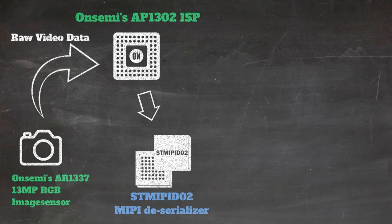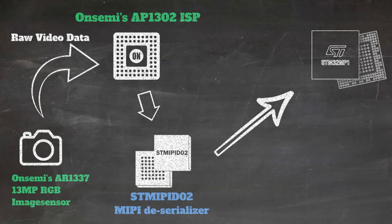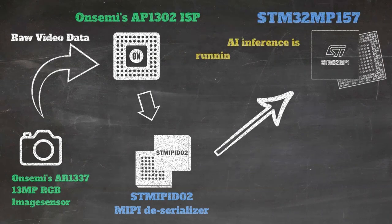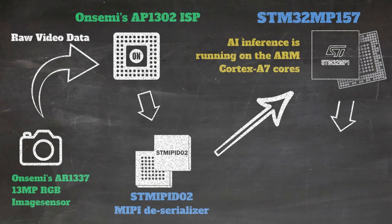When the processor receives the stream, it rescales it for the AI model requirements and then combines the inference output with the original video input. As a last step, the processor outputs the final result on an HDMI monitor.